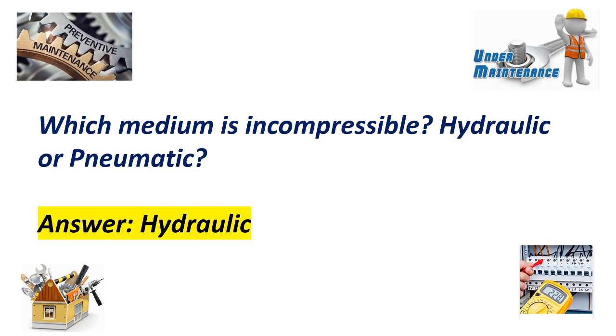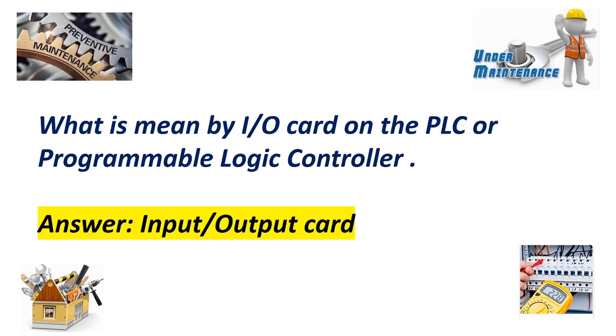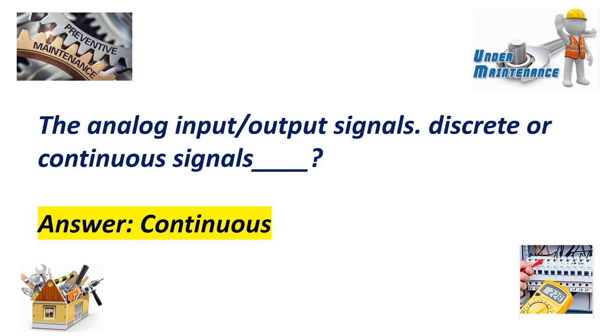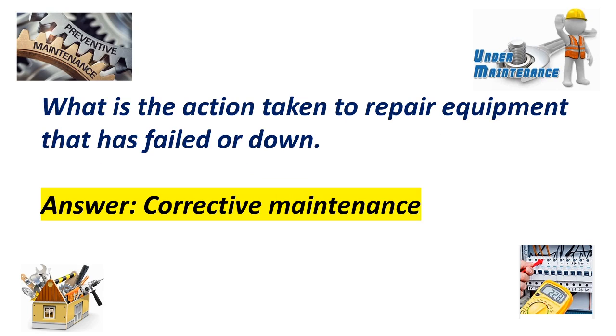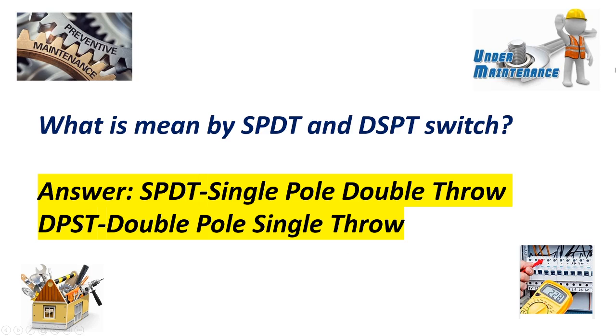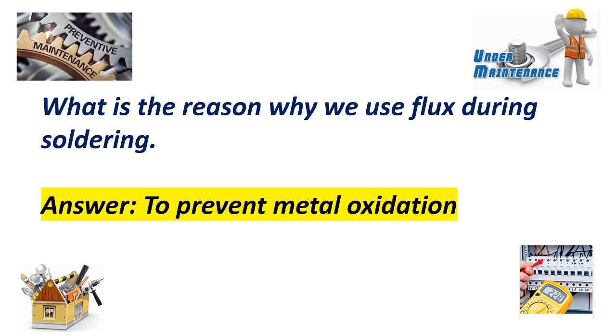Which medium is incompressible, Hydraulic or pneumatic? Answer Hydraulic. What is mean by I/O card on the PLC or programmable logic controller? Answer Input-Output card. The analog input and output signal, discrete or continuous signal? Answer Continuous signal. What is the action taken to repair equipment that has failed or down? Answer Corrective maintenance. What is mean by SPDT and DPST switches? Answer SPDT single pole double throw. DPST double pole single throw. What is the reason why we use flux during soldering? Answer To prevent metal oxidation.